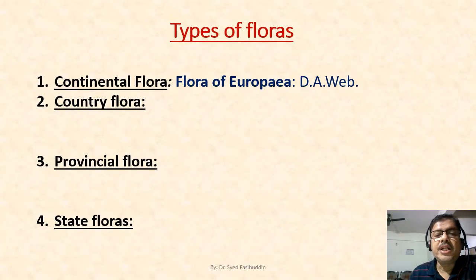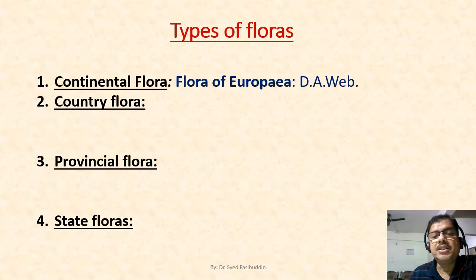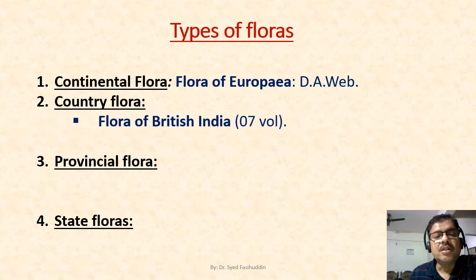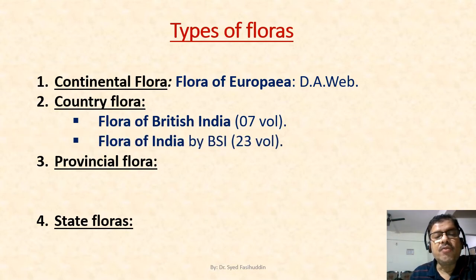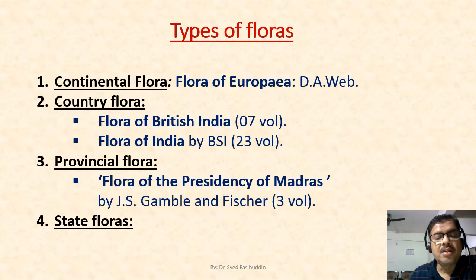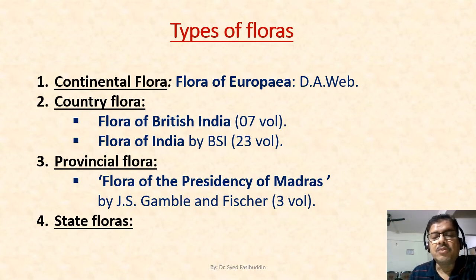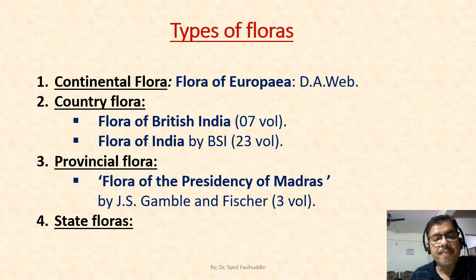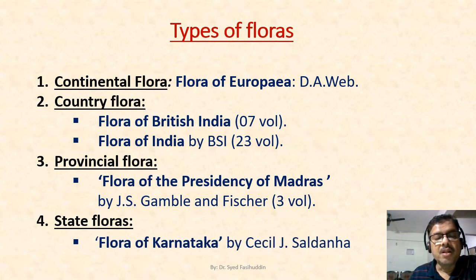The types of floras include: continental floras, such as the Flora of Europe by Da Webb; country floras, like Flora of British India published in seven volumes; Flora of India by the Botanical Survey of India in 23 volumes; then provincial floras, such as the Flora of the Presidency of Madras by Gamble and Fisher in three volumes, and Flora of Bombay Presidency by T. Cook; and state floras like Flora of Karnataka by Cecil J. Saldanha.